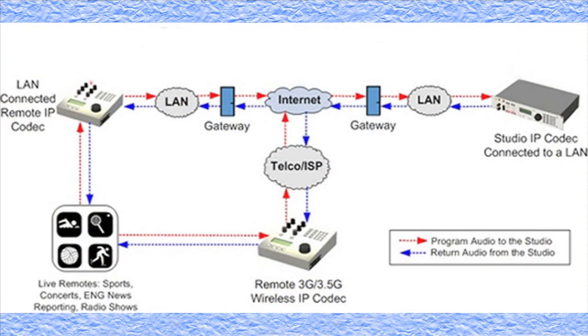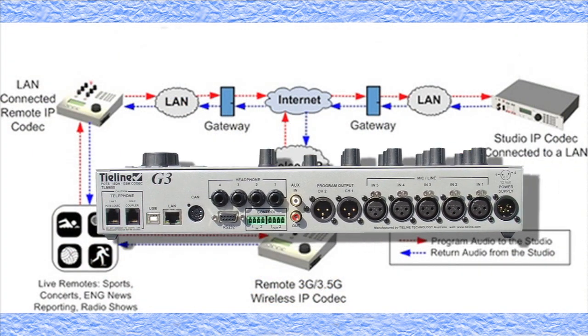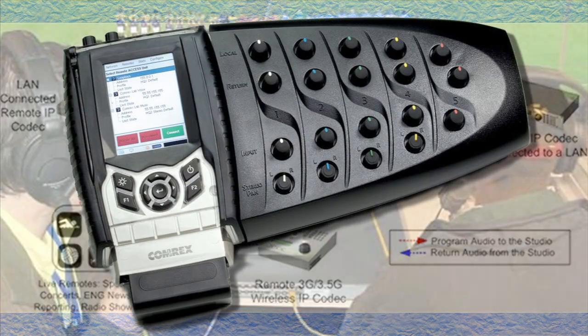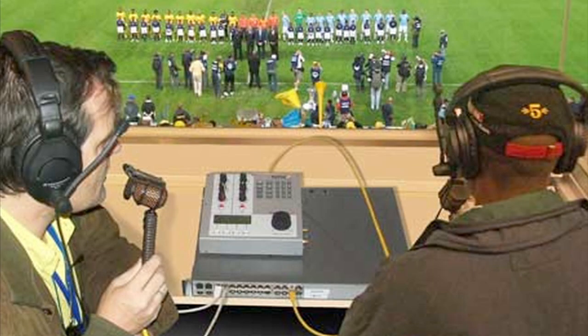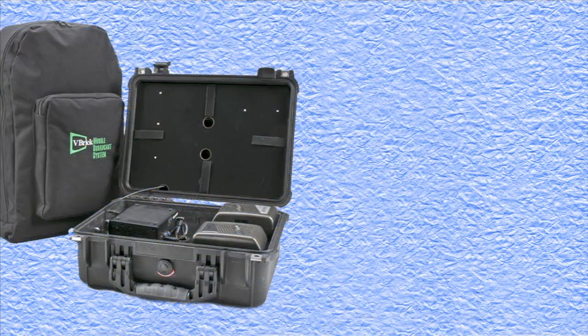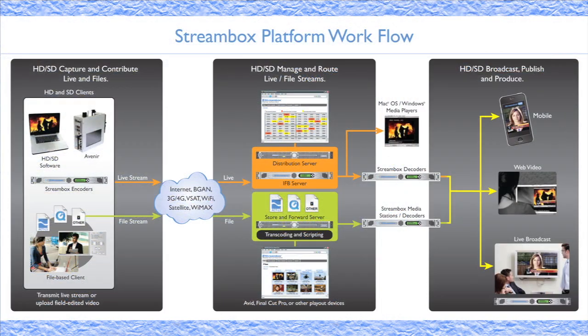For remote broadcasts, radio is using VOIP, or Voice over IP, to get audio from remote sites back to the studio via data networks. And for television, there is video over IP, which is now gaining attention with systems from manufacturers such as VBrick and StreamBox.